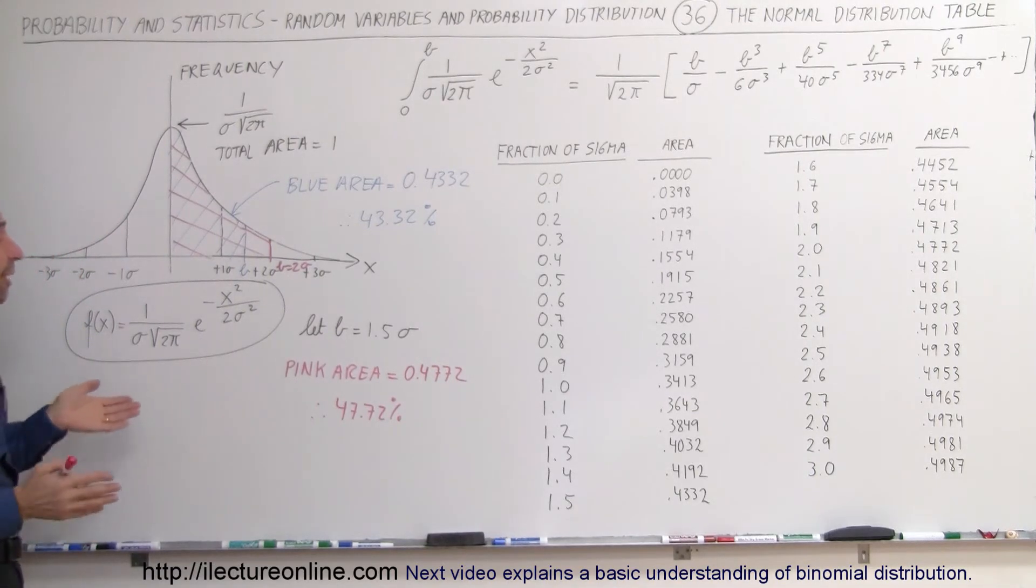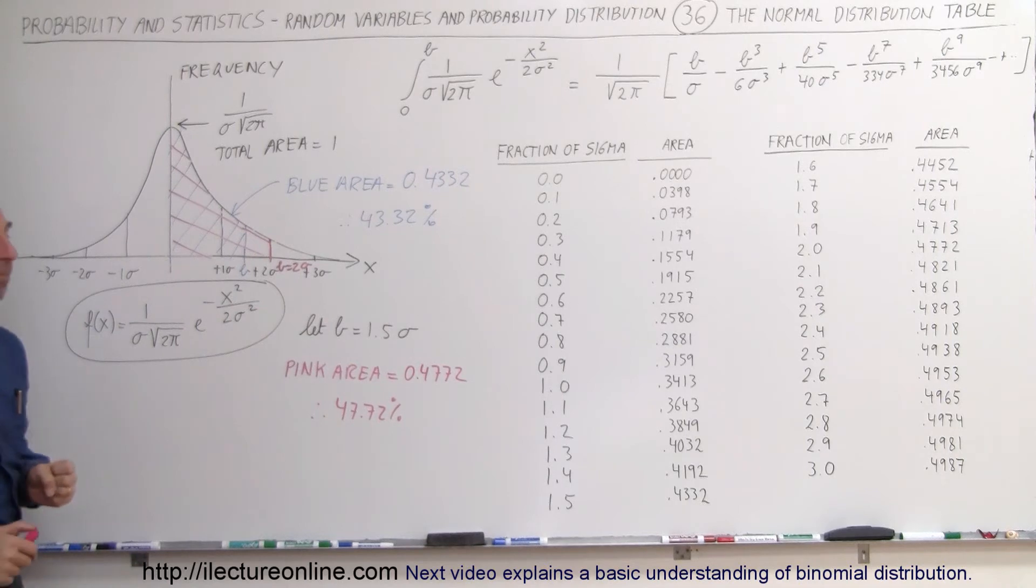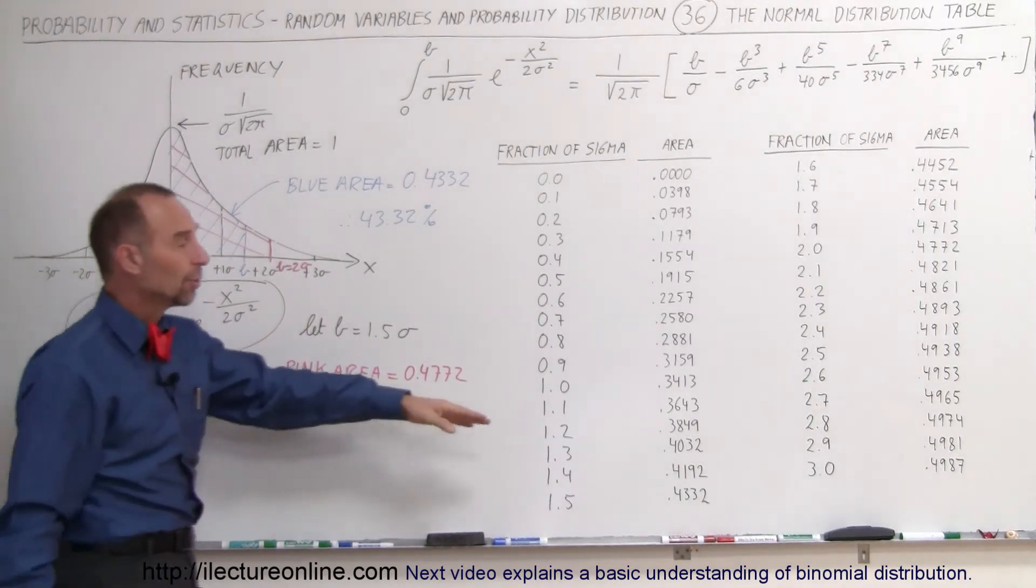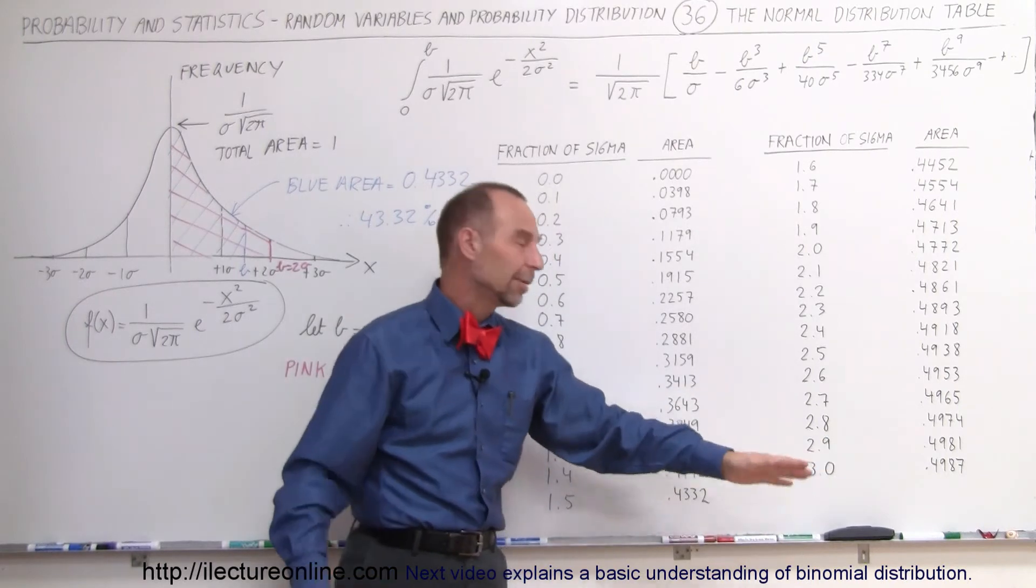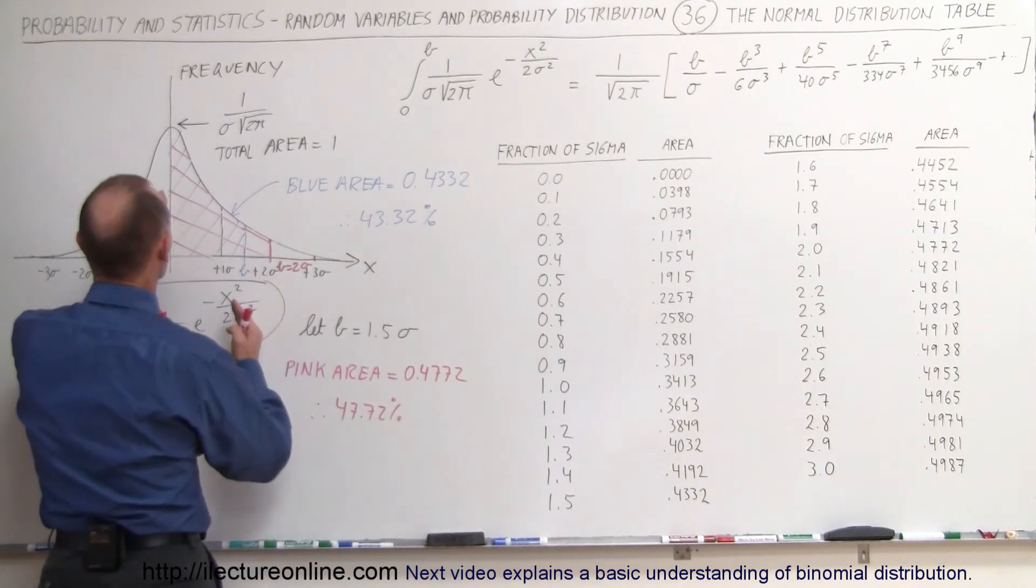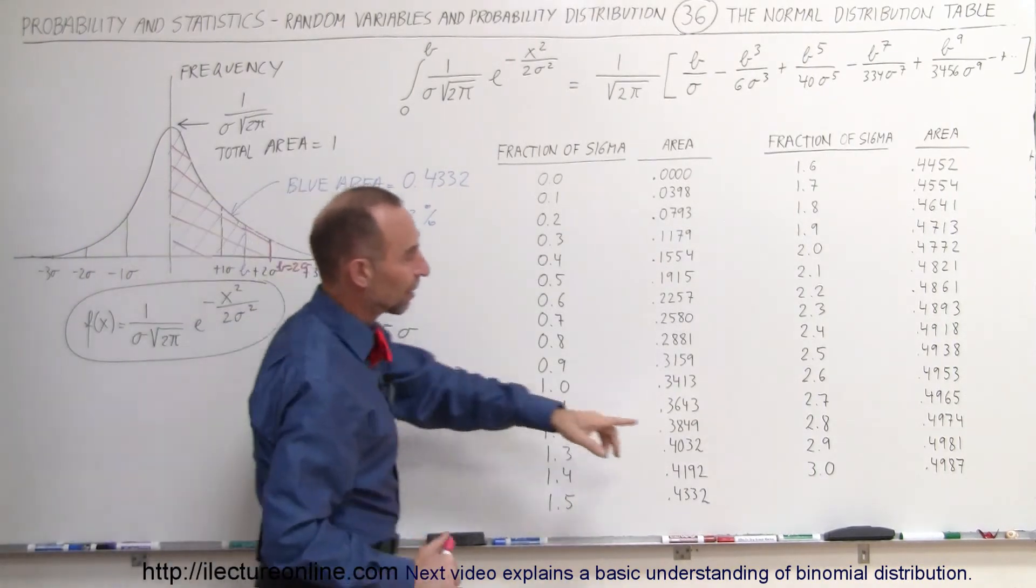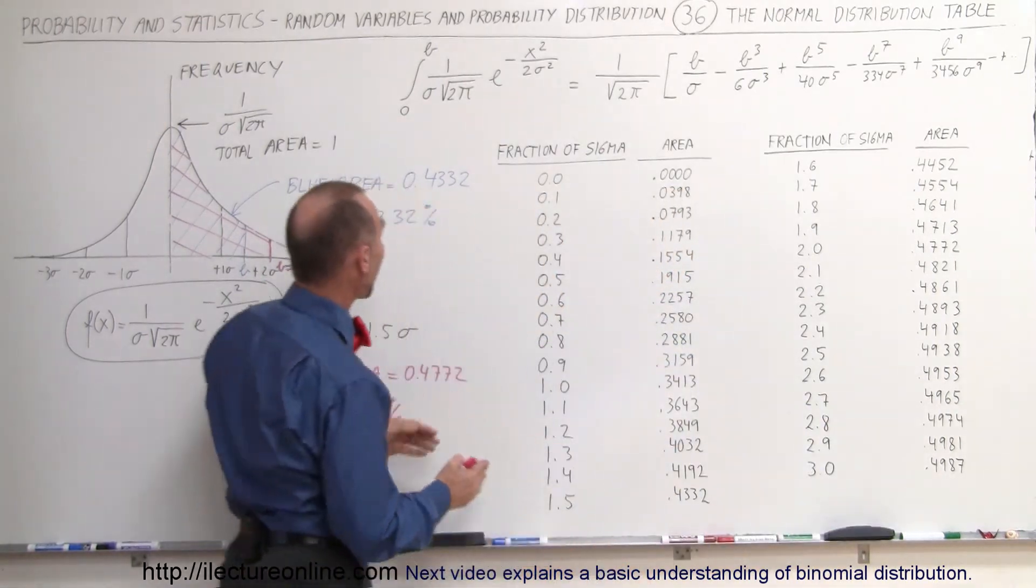And so therefore, we can find any area underneath the curve simply by utilizing a table like that. And if you want to go out further than 3.0, which is 3 sigma as we call it, then of course you need to get another table to add some additional values. But notice that all the area between 0 and 3 sigma accounts for 49.87% of the total area, which is just about half.